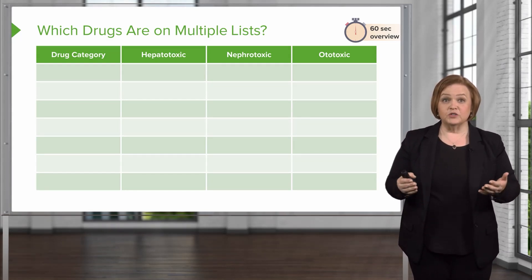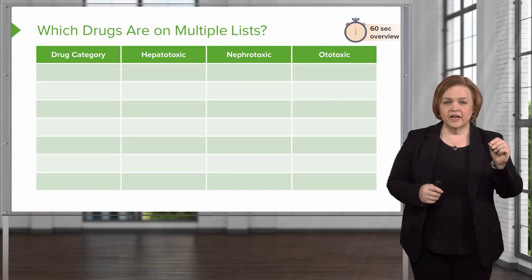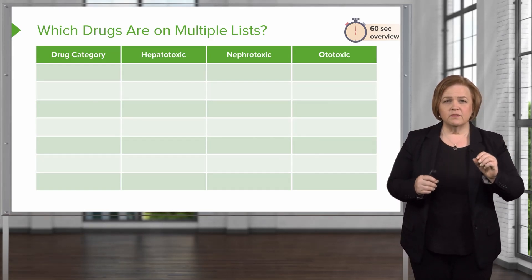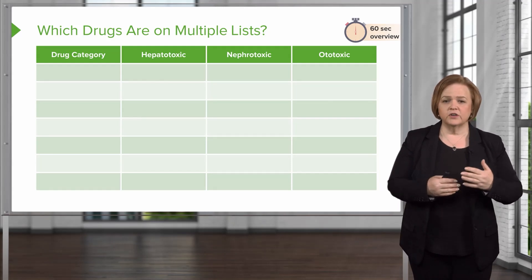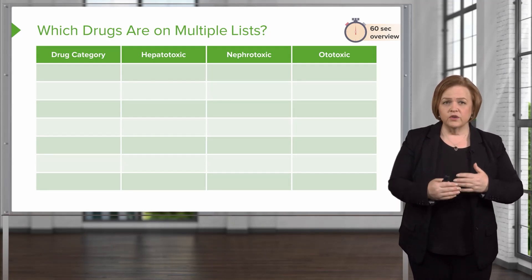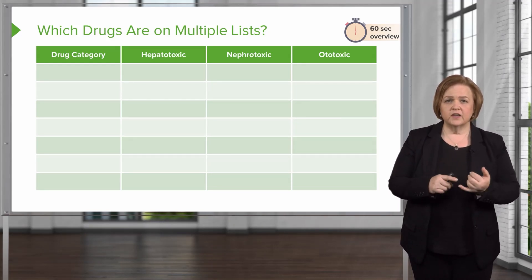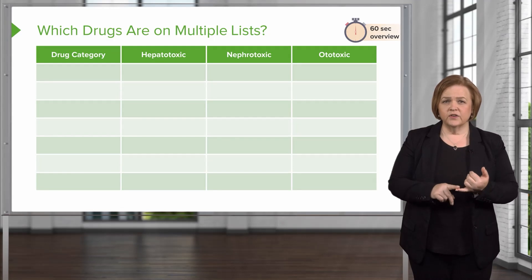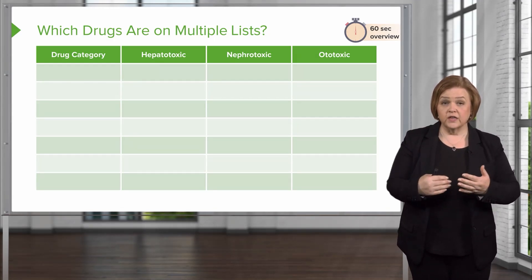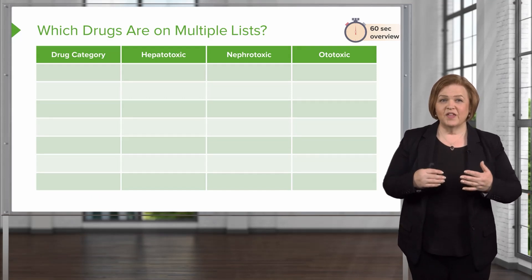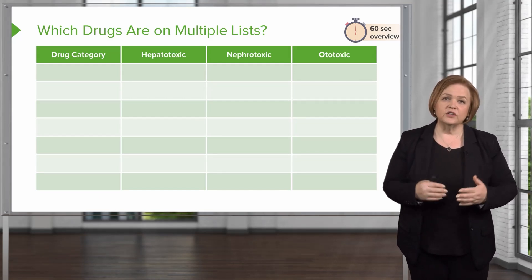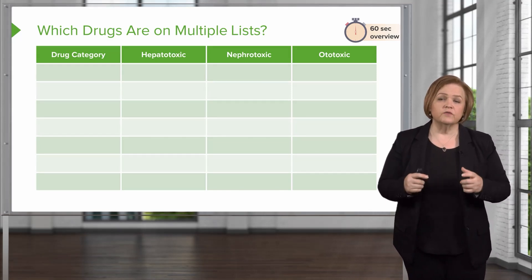Here's what we want you to do: look at the drug category on the left, and then look for drugs that are in multiple lists. Go back through your notes, review, refresh — see which drugs are hard on the liver, the kidneys, or the ears, and see which drugs are on multiple lists. That's an example and a way for you to chunk information.